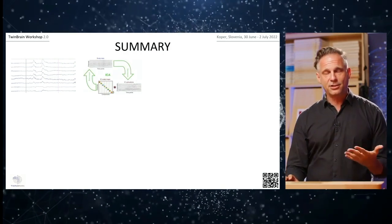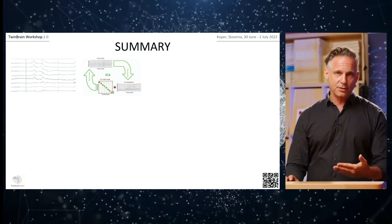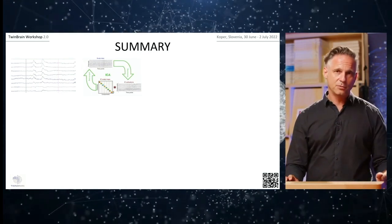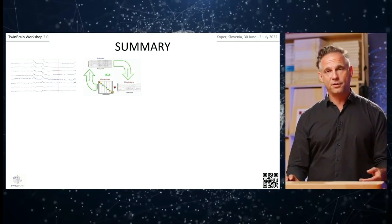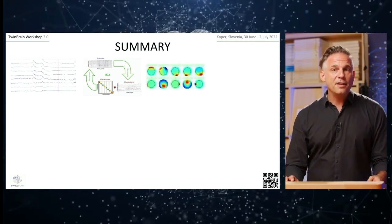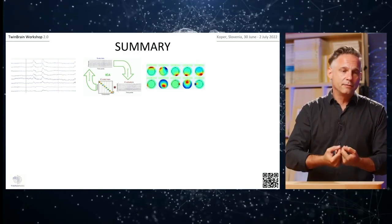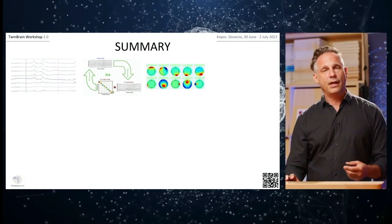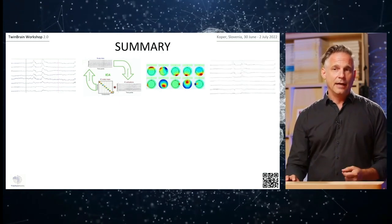ICA is not magic — it's a mathematical model with assumptions that must be checked. Whatever model you use, you decompose the data and check whether the model assumptions hold. ICA assumptions seem to work largely, allowing dissociation of brain from non-brain activity, which is of particular interest for MOBI data. Using this information to build more objective preprocessing pipelines and classify components helps achieve a more objective approach to complex data analysis.